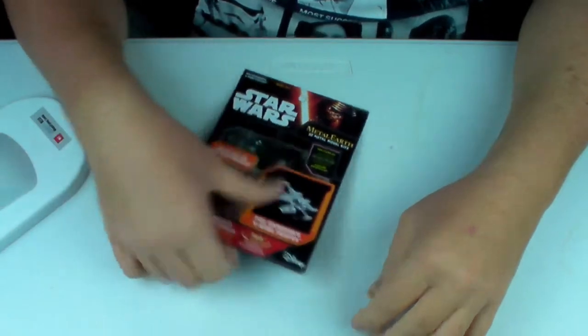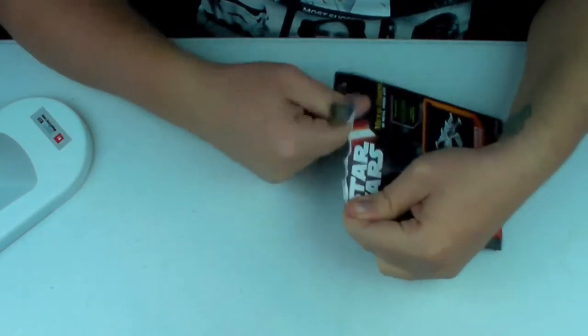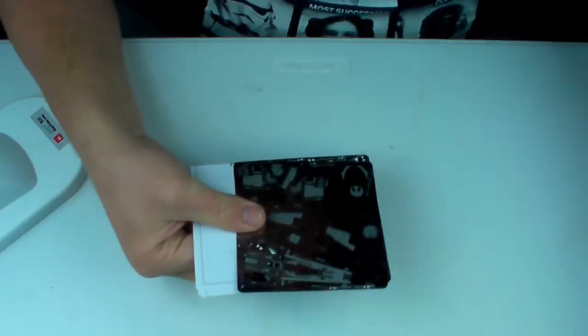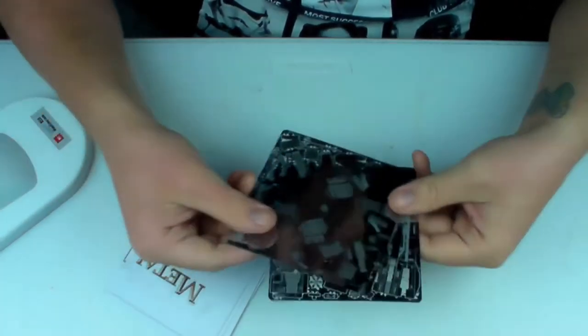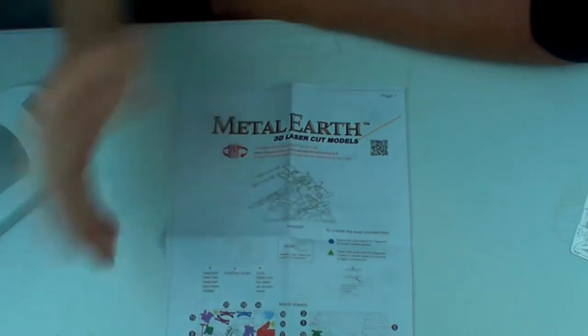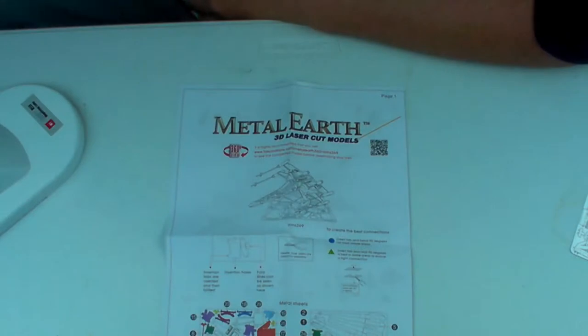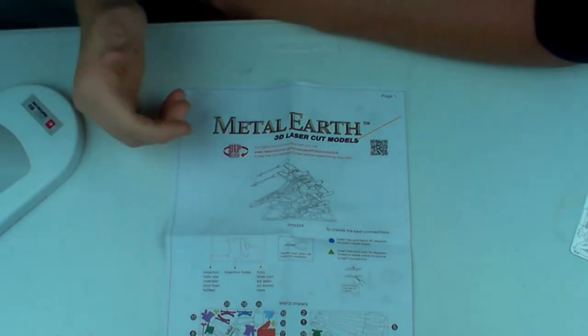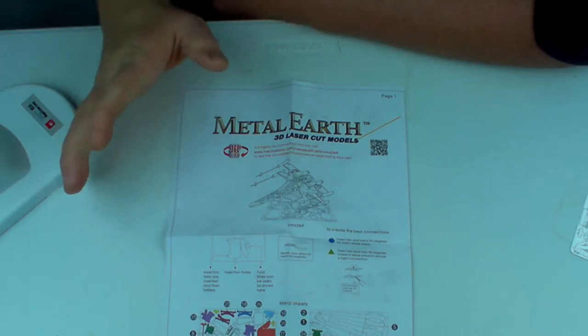Poe Dameron's X-Wing fighter. What do we have in store? Instructions and two metal sheets. We have two sheets to the instructions, which is reminiscent of what Metal Earth is starting to do now with their newer kits. And I like that change.